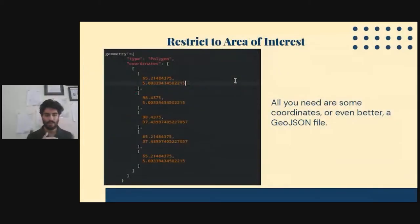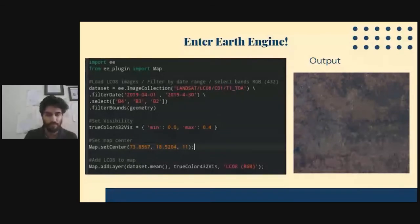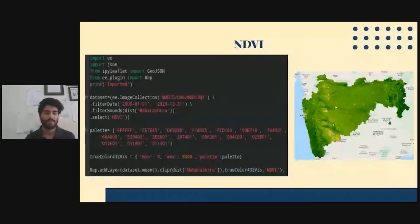Talking about restricting your area of interest, the easiest way to do this is to supply coordinates. Whatever area of interest is, you get the coordinates for that, and you supply it in a GeoJSON file. You can make a geometry object, and you can pass this as a parameter where you're specifying your area of interest. If we go back here, you can see on the fourth line, there's a dot filter bounds, which specifies your area of interest, and you pass the geometry object there.